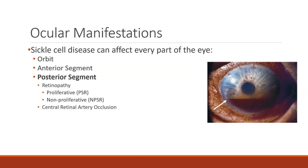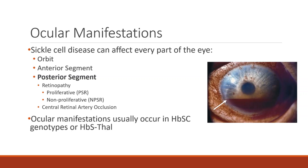A rare but serious cause of vision loss is central retinal artery occlusion, resulting in retinal ischemia. Commonly, angioid streaks have been reported in patients with hemoglobin SS and sickle cell trait. Ocular manifestations of sickle cell disease usually occur in hemoglobin SC genotypes or sickle thalassemia, with 33% and 14% presenting with complications respectively, compared to just 3% in hemoglobin SS patients.